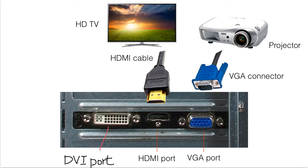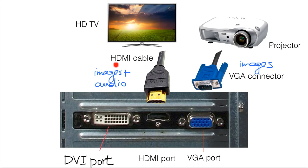And finally we have the traditional VGA port. Through a VGA connector and cable, we can display the information of the computer through a projector. Of course, the quality of an HDMI output is better than VGA, and an HDMI cable can transmit both images and audio, while a VGA cable can only transmit images.